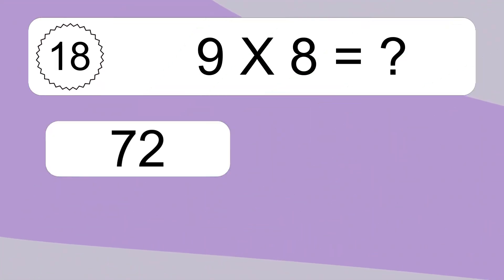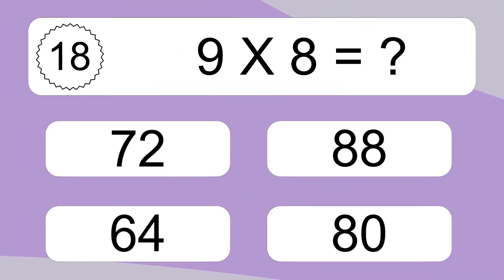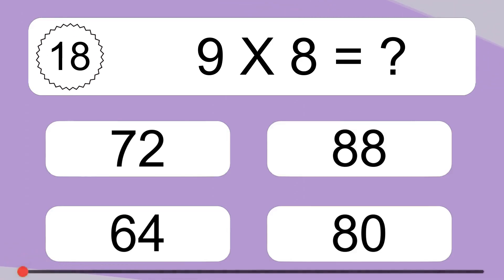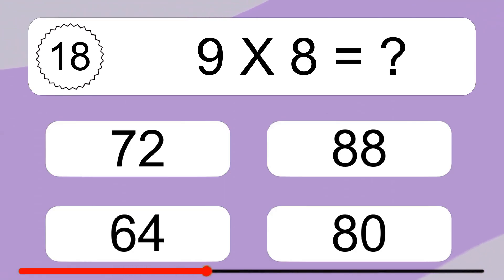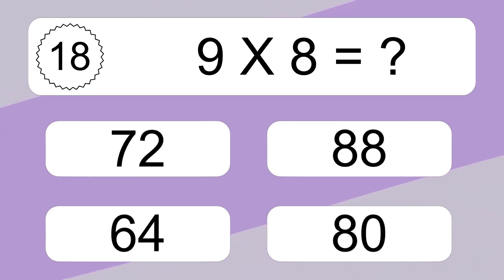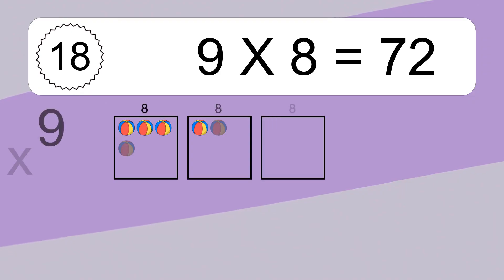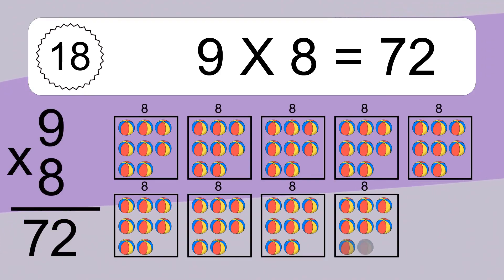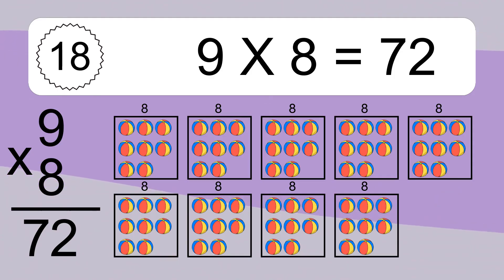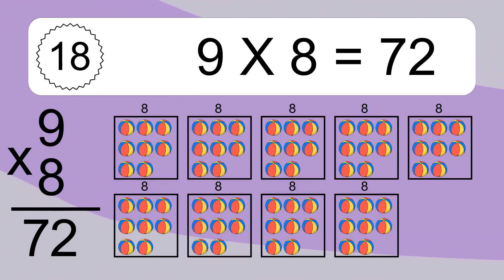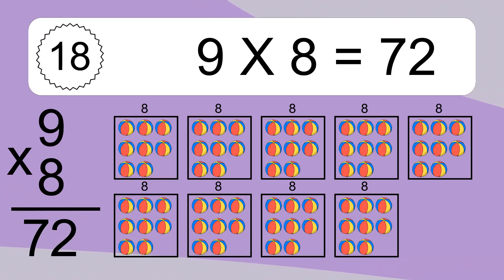9 times 8 equals what? 9 times 8 equals 72. We have 9 boxes and each box has 8 colorful balls inside. If you count all the balls in all the boxes together, you will have 9 times 8 balls. This equals 72 balls.